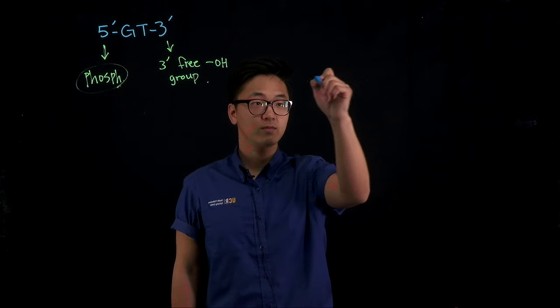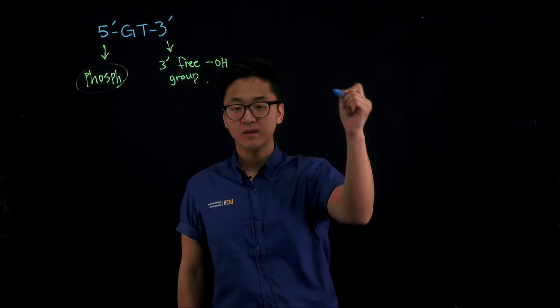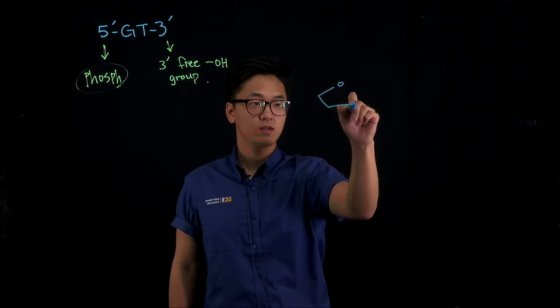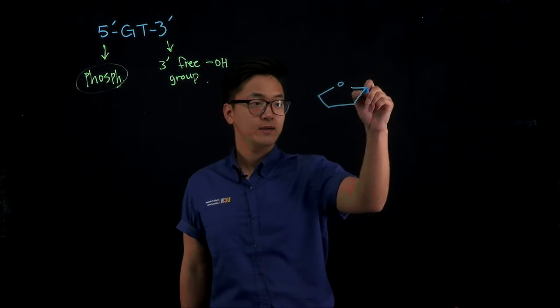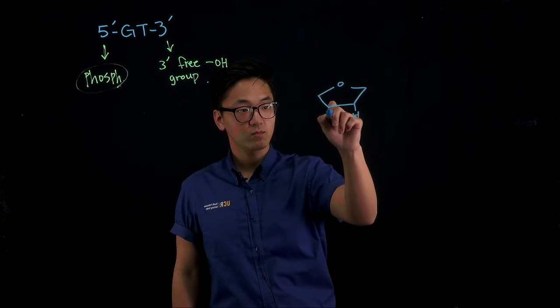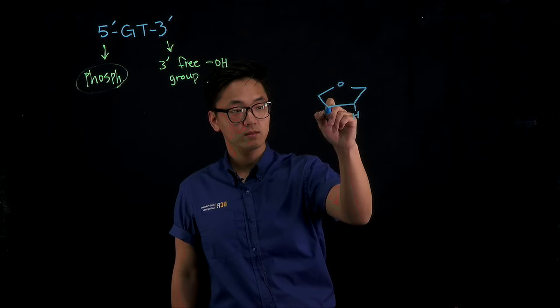for simplicity, I'm just going to draw my diagram really simple, but let's first start with our sugar. So we have a DNA, so our second prime end, we have no oxygen.